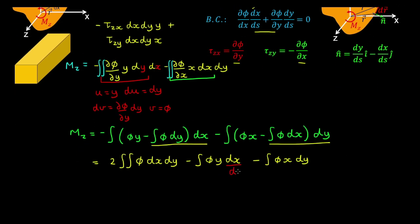Now if we do a change of variables, we'll integrate over the boundary of the section. dx/ds is the negative y-component of the normal at the boundary, and dy/ds is the x-component of the normal. Remember that by this boundary condition, the total derivative of the stress function with respect to s along the boundary is 0.